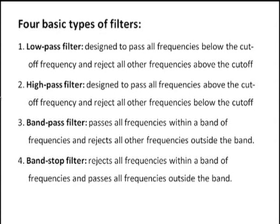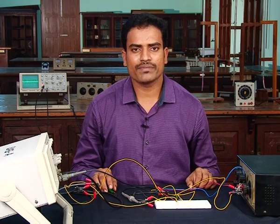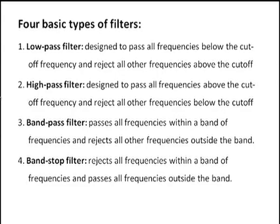The four types of filters are: low-pass filter, high-pass filter, band-pass filter, and band-stop filter. A low-pass filter is designed to pass low frequencies below the cut-off frequency while rejecting all other frequencies above the cut-off frequency. In the case of a band-pass filter, it passes all frequencies within the band of frequencies and rejects all other frequencies outside that band.